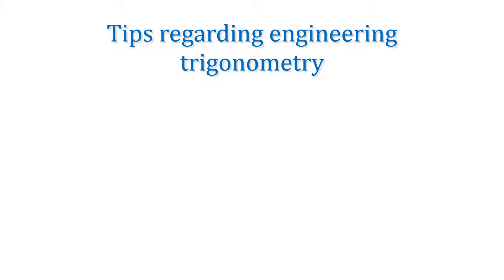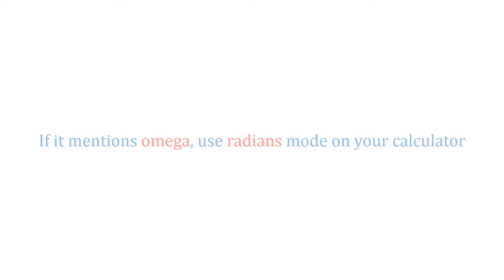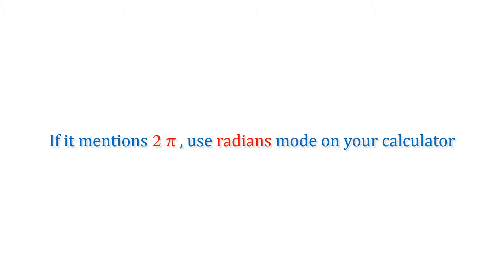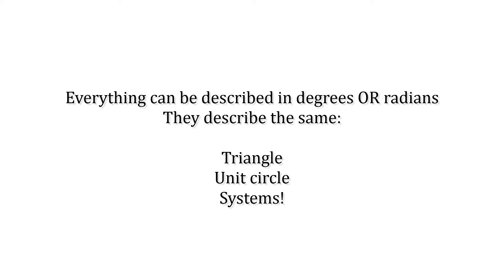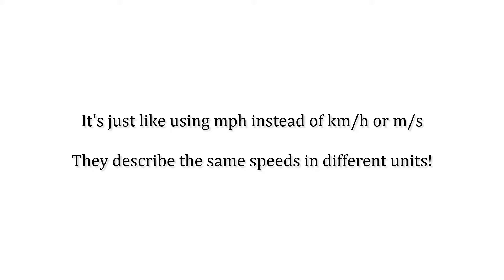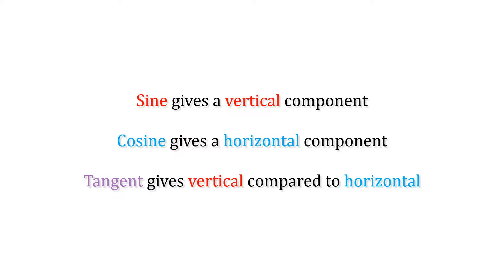Some tips regarding engineering trig: if your question mentions omega, use radians mode on your calculator by selecting the correct angle setup. If it mentions 2 pi, use radians mode. If it mentions omega or 2 pi, then it's probably something spinning and is a periodic wave. Everything can be described with degrees or radians because they describe the same triangle and the same systems — like miles per hour compared to kilometres per hour. Remember the sine function gives us a vertical component or opposite side, cosine gives us the adjacent or horizontal, and tangent gives us the vertical compared to the horizontal.